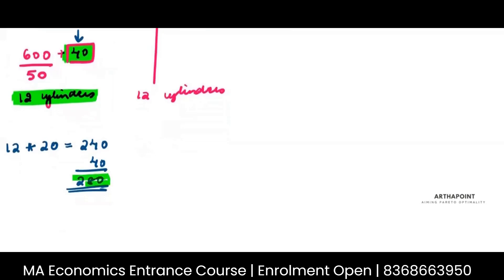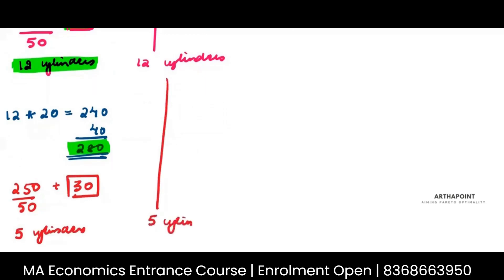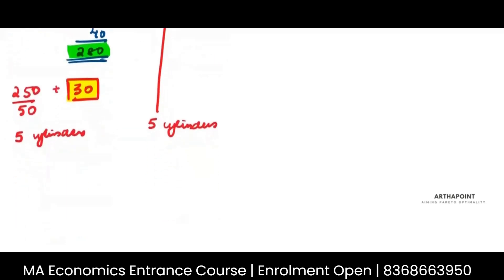Again, 280 is not completely divisible by 50. The nearest usable amount is 250 plus 30. From 250 I can buy 5 cylinders but I have to save these 30 rupees. So I go ahead and buy 5 cylinders but don't use the remaining 30. I refund those 5 cylinders and get 20 per cylinder, so 120 rupees back.